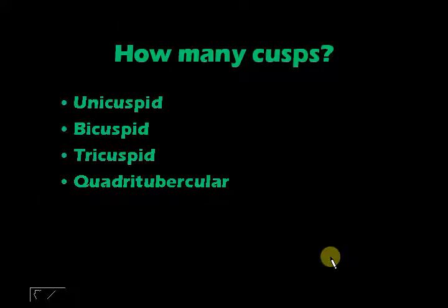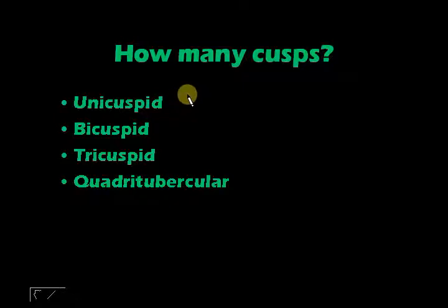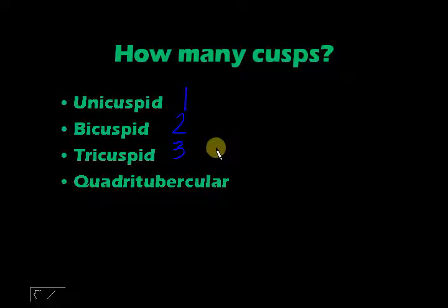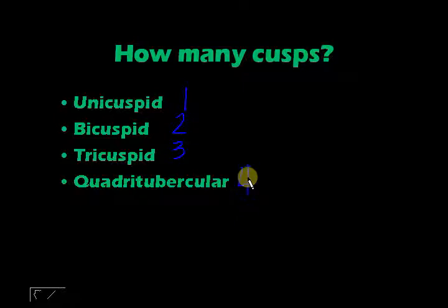In terms of cusp number: incisors and canines have one cusp — unicuspid. Bicuspid means two, tricuspid or tribosphenic or tritubercular means three, and quadritubercular means four cusps.